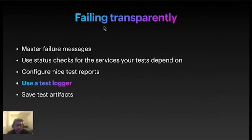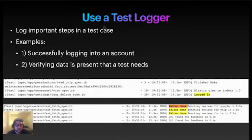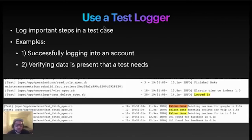In addition to those three things, the next topic is using a test logger. I would suggest it's really important to log what your test is doing as it's doing it, so that you can again fail transparently. Your software under test has logs, and developers are always combing through those logs to determine why there was a server outage on Friday or why the data isn't present. Well, what I would suggest is that the tests themselves also create logs that log important steps in a test case, so that can help you triage the test fail when it happens — you'll know what the test achieved, what it did and didn't do. Some examples here of things your test log can log: successfully logging into the front end, or verifying that data is present that a test needs.